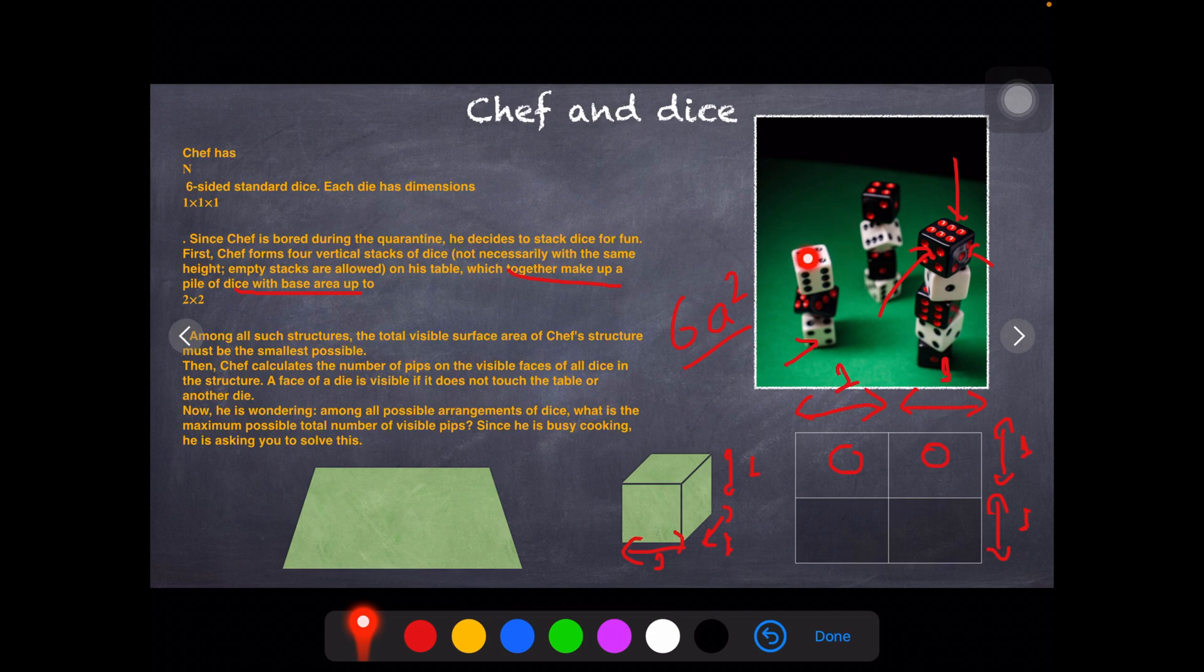Pips - the face of the die is visible if it does not touch. Now he's wondering, among all the possible arrangements, what is the maximum possible total number of visible pips? In the second part of the question, after you have minimized the surface area, you will have to maximize the summation of the pips that is visible.